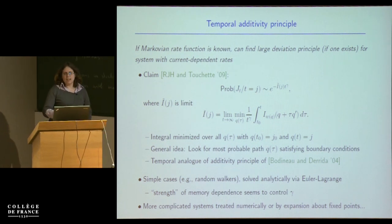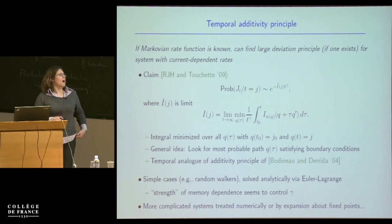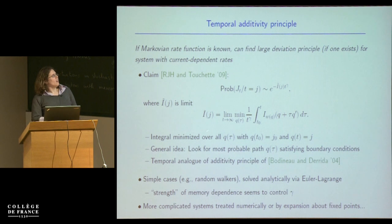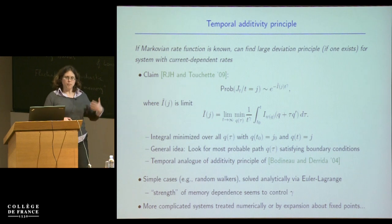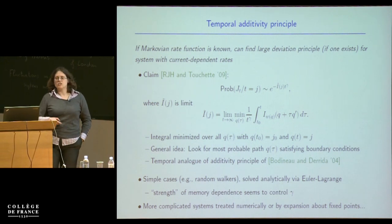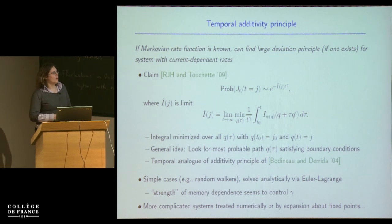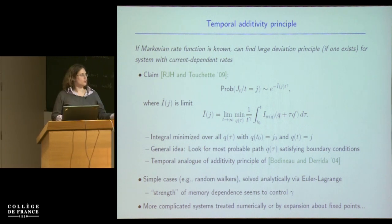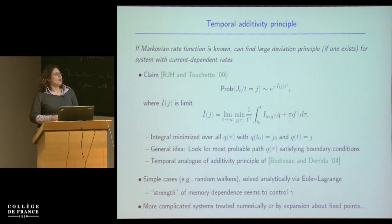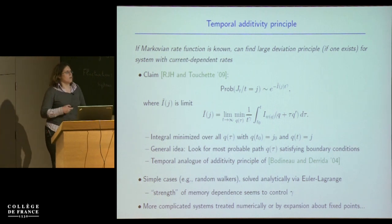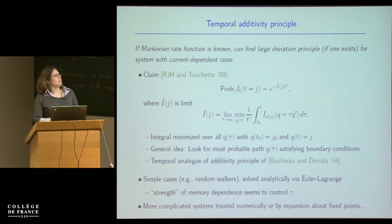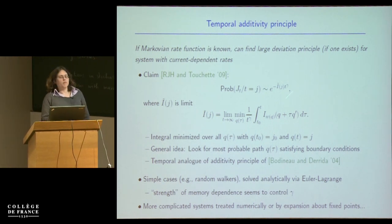It's a kind of temporal analogue of an additivity principle proposed for calculating density large deviation functions in space. In principle, if you know the Markovian rate function, you can do the integral, minimise it, and find a large deviation principle for the system with memory. You can do that for simple cases — like the random walker I showed, or some slightly more complicated random walkers — by the standard Euler-Lagrange minimisation procedure. What you find is that indeed you get powers of T different from one, and the gamma that appears depends on the strength of the memory: as you make the memory stronger, you change the power.